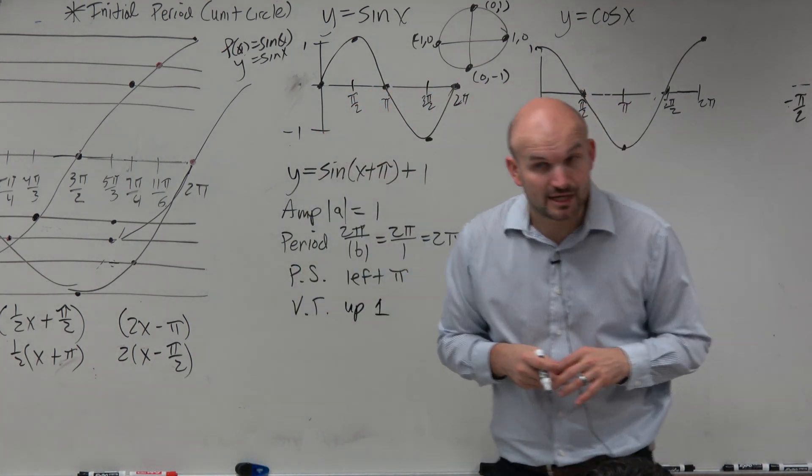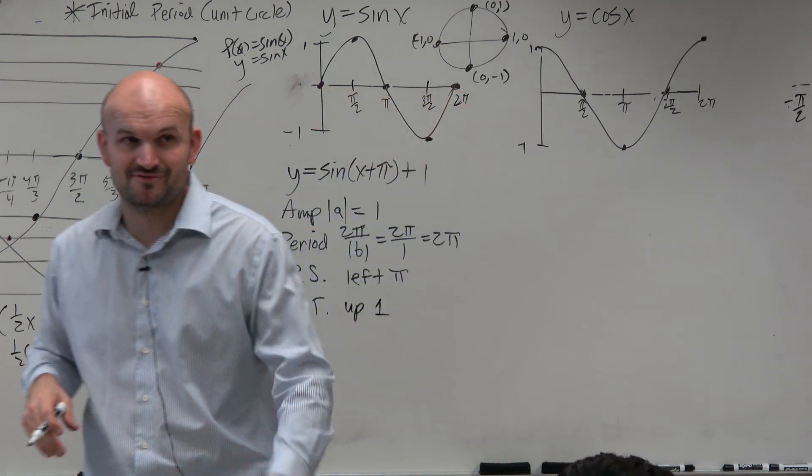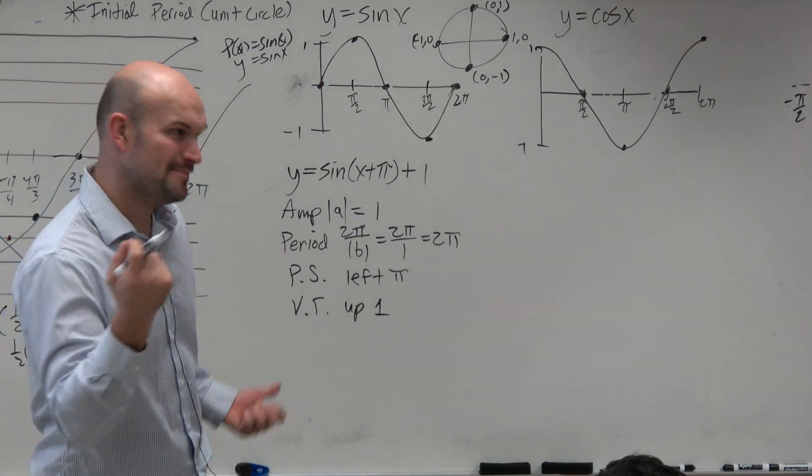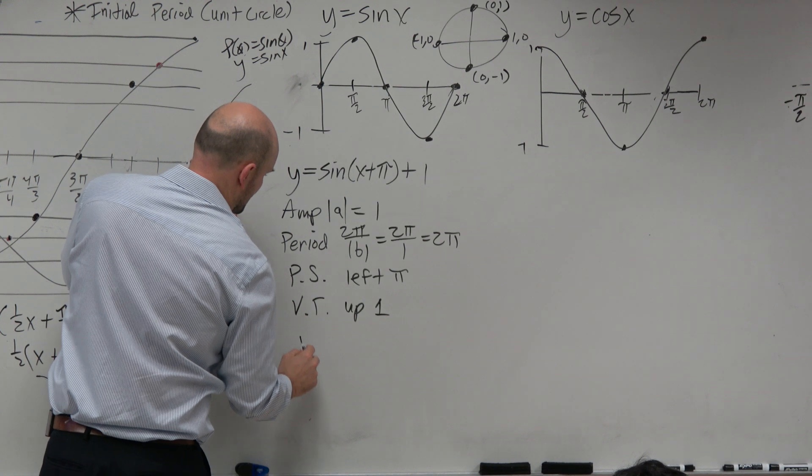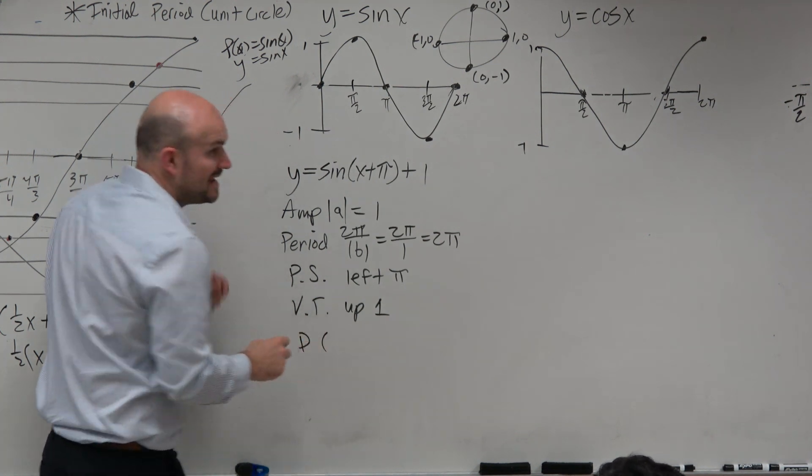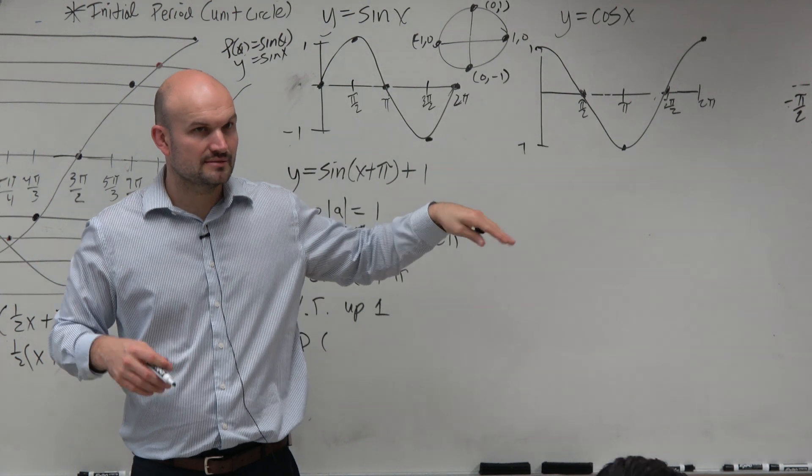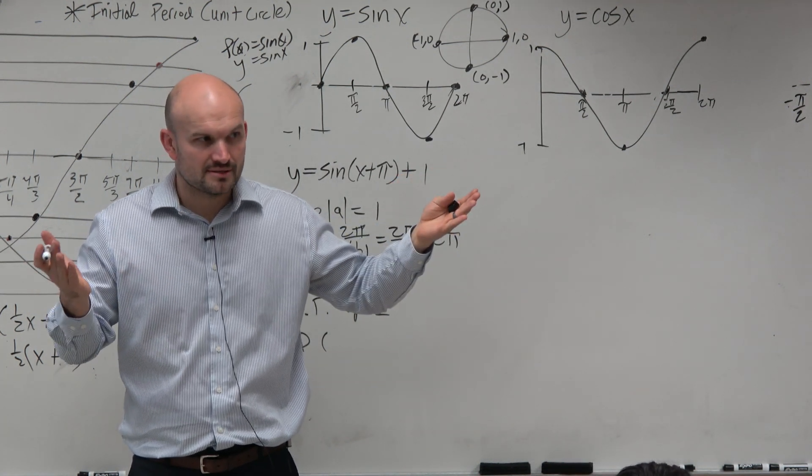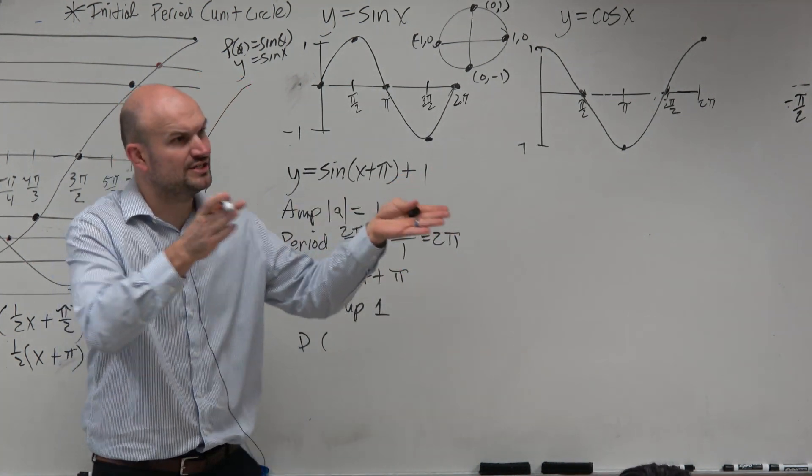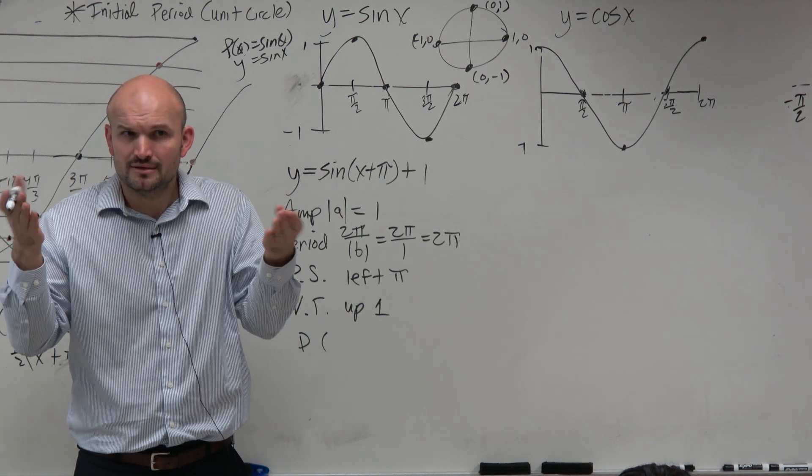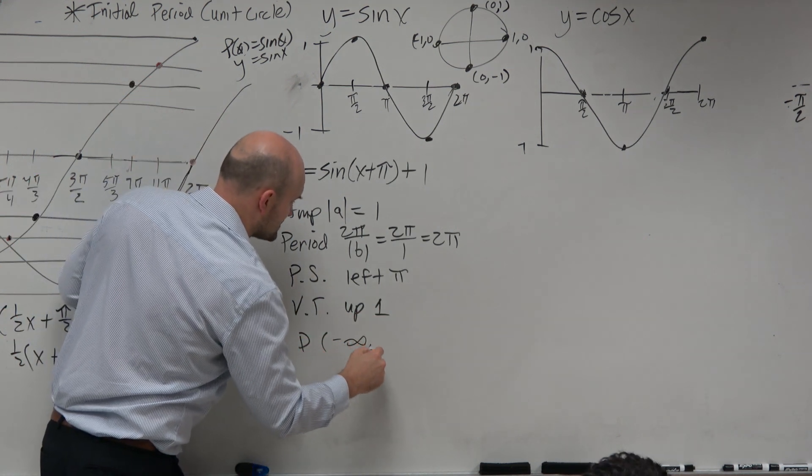These are the basic characteristics, except for domain and range. So the domain, if we don't have any discontinuities, it's all real numbers. What about—oh, but what did I do? Oh, I shifted it to the left though. Does that change? No. There's no discontinuities, guys. The domain is all real numbers.